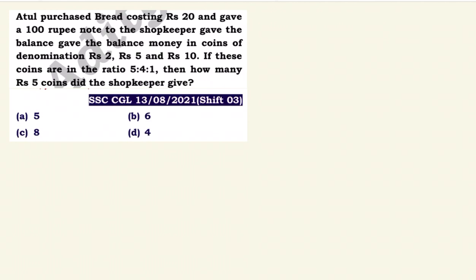Atul purchased bread costing rupees 20 and gave a hundred rupee note to the shopkeeper. The shopkeeper gave the balance money in coins of denomination of rupees 2, rupees 5, and rupees 10. These coins are in the ratio of 5 is to 4 is to 1.